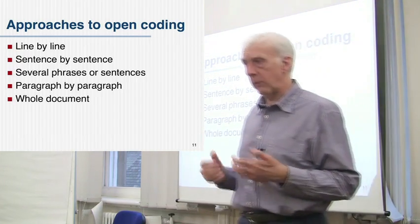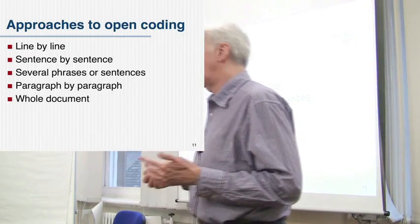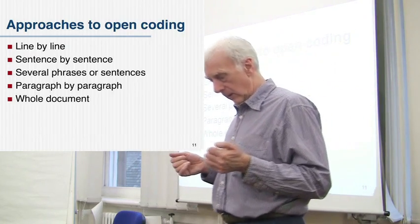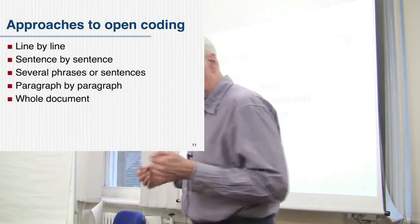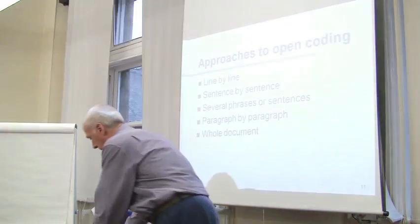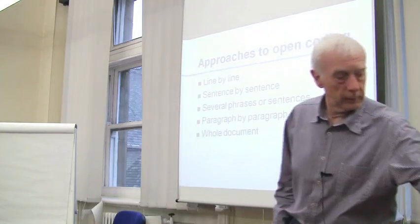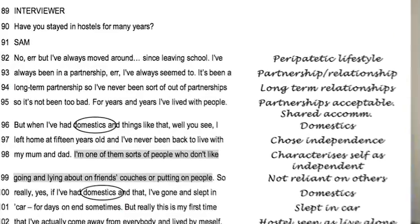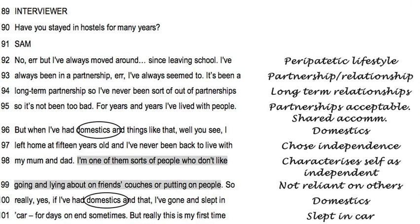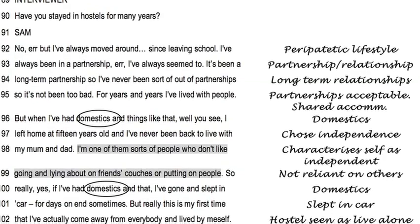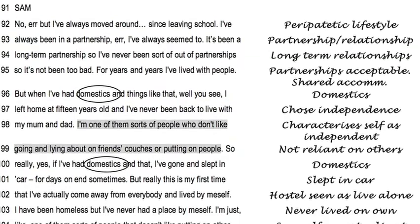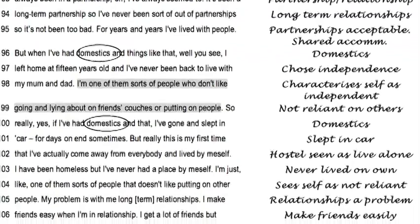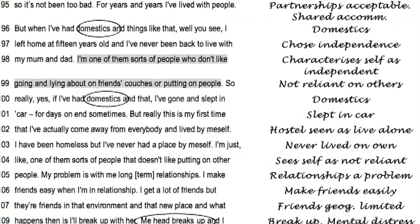Strauss and Corbin also suggest that you might do some line-by-line coding. Typically lines aren't sentences — they're bits of sentences. I thought I'd share an example of this. There it is on the slide — it's an interview with a homeless man called Sam, who obviously has other problems. He's got no house, he's homeless, and he's been involved in domestics. It looks like he's had partners at various stages but had various kinds of bust-ups with them.